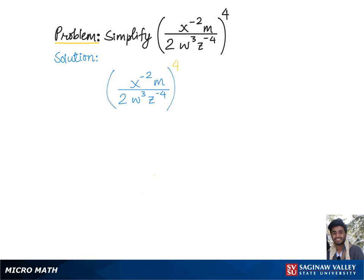let's first change every negative exponent into positive using rule 1. According to which, we'll get m over 2 times w cubed times x squared and g to the 4th in the numerator, with the whole group still to the 4th power,